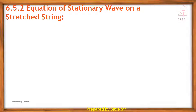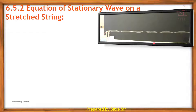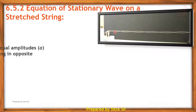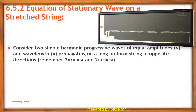Next point is the equation of a stationary wave on a stretched string. This is the result of stationary waves of equal amplitude A and wavelength lambda propagating on a long uniform string in opposite directions. Remember: 2π/λ is equal to k, and 2πn is equal to ω.